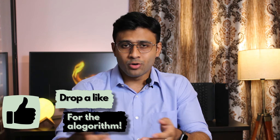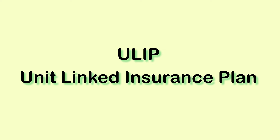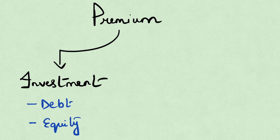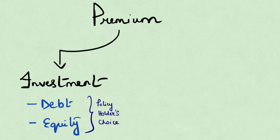On paper and theoretically this looks great, but I'll go ahead and tell you why it isn't. The third type is the ULIP, the unit linked insurance plan. A ULIP combines insurance along with investment. Here also you pay a fixed premium for a specified period of time, but a part of the premium is utilized towards investment, done in debt and equity instruments, and you get to choose where that investment is done.